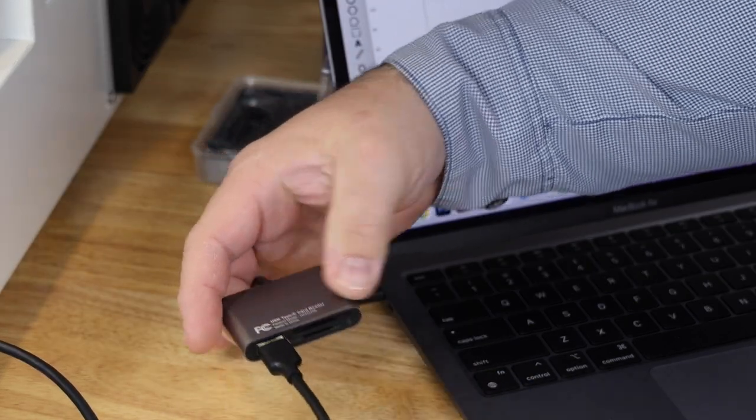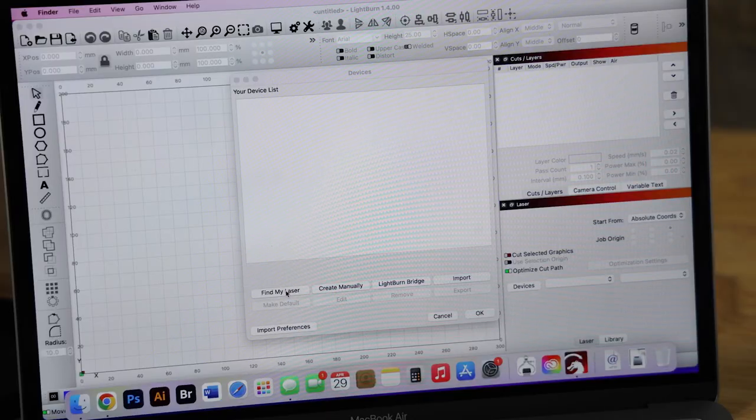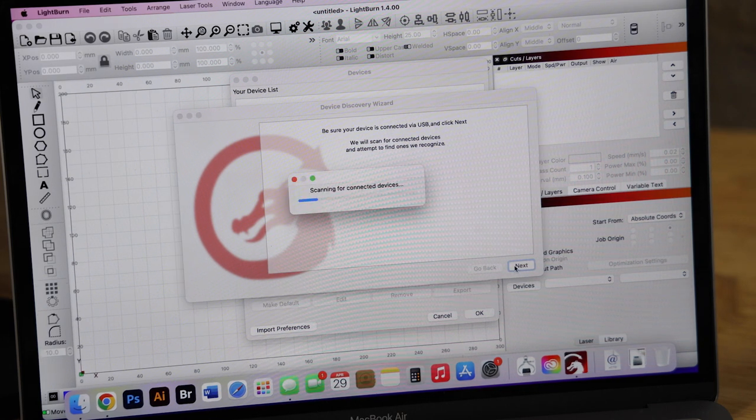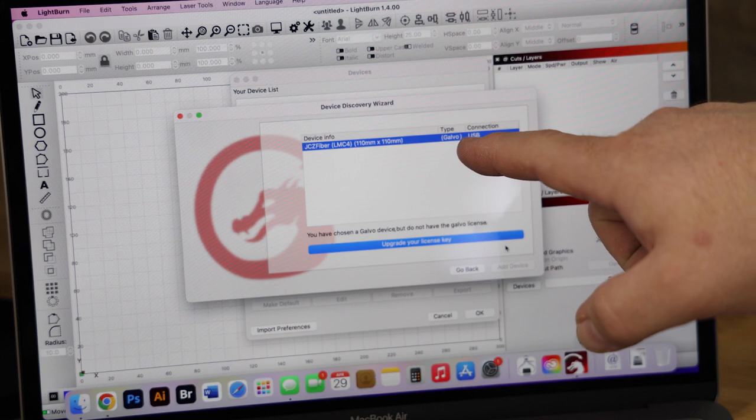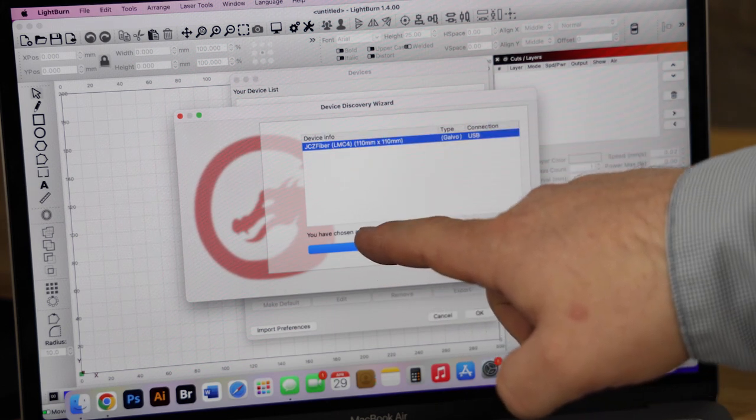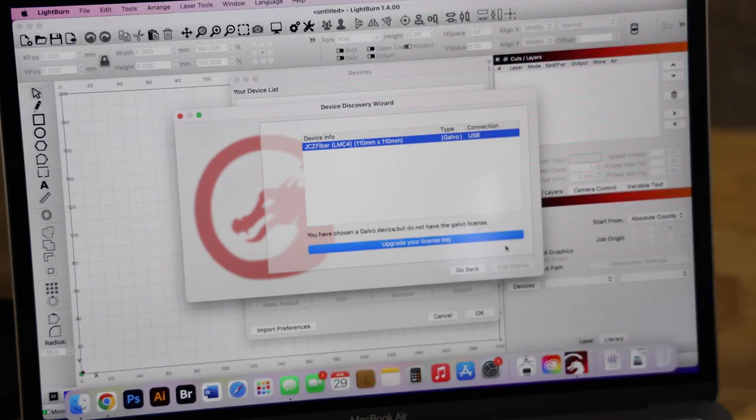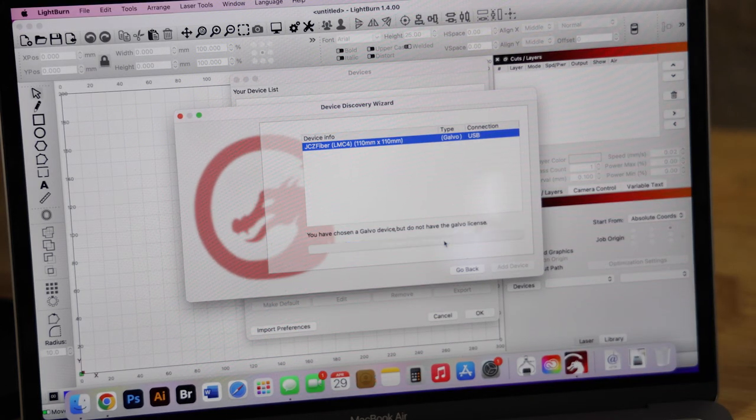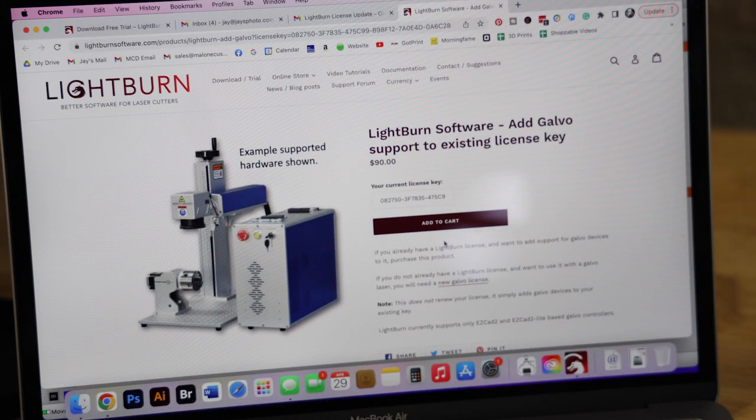So we're going to go ahead and plug it up. Now that we have it plugged up, I'm just going to click find my laser, and it's going to scan for lasers. It does show on here where it did find the Galvo laser here, this fiber laser. But it also tells me that I do not have the Galvo license key, so I will have to upgrade my license for that.